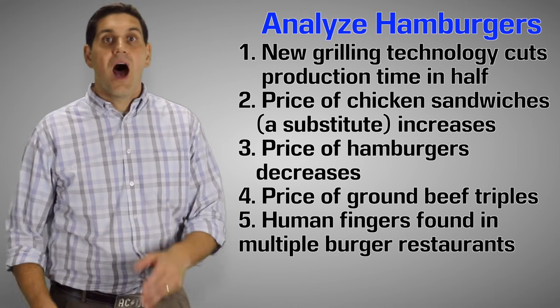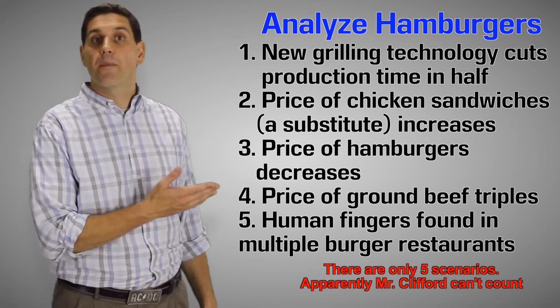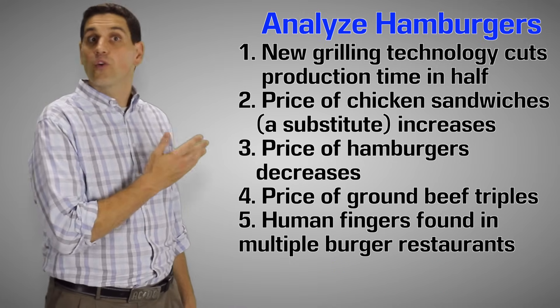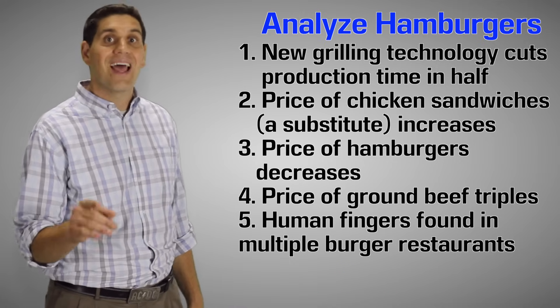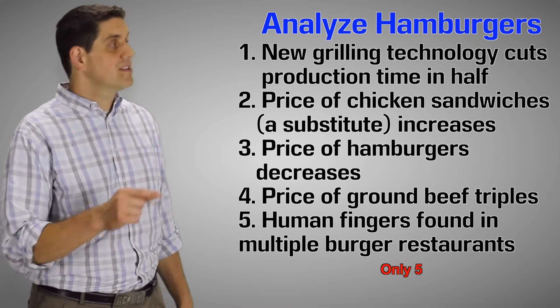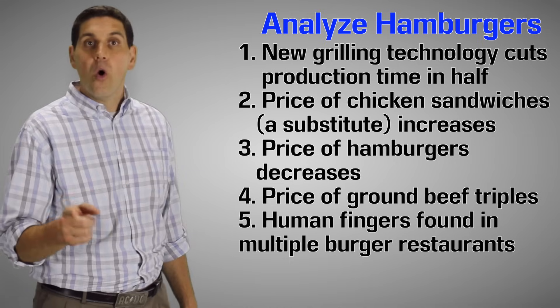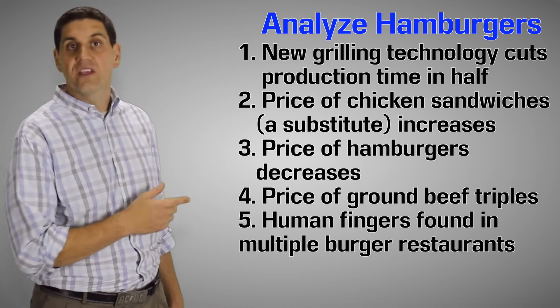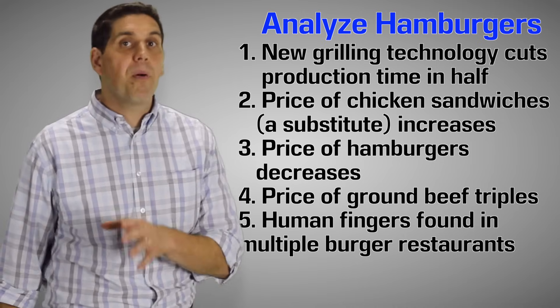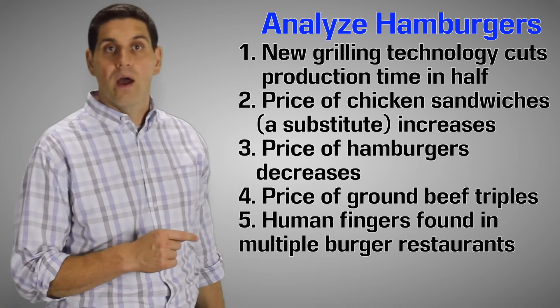Now it's time for you to practice. I have six scenarios right here for hamburgers. Your job is to figure out if it's going to be an increase or a decrease in demand or supply, what shifter it is, and what happens to price and quantity for each scenario. So get a piece of paper and draw six supply and demand graphs and show on each graph what happens for each one of these scenarios. And remember for each one of these things we're analyzing hamburgers. Make sure to pause the video and then I'll explain each one. Good luck.